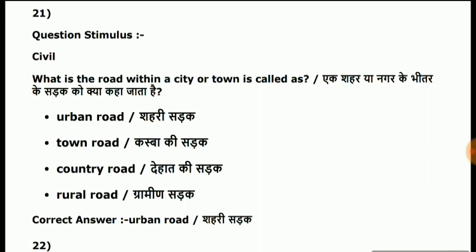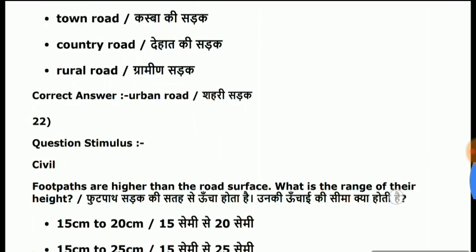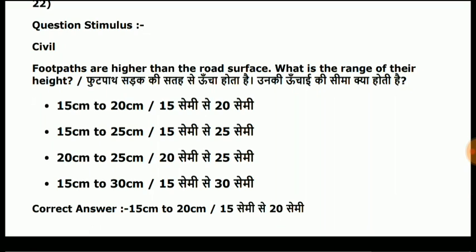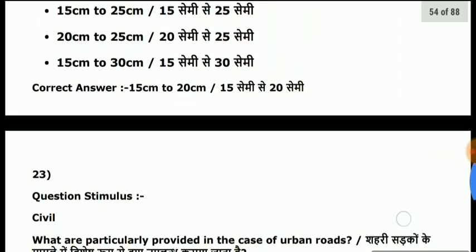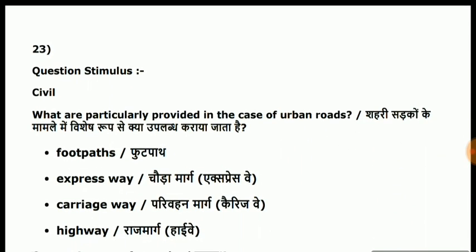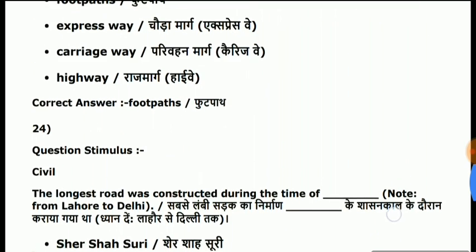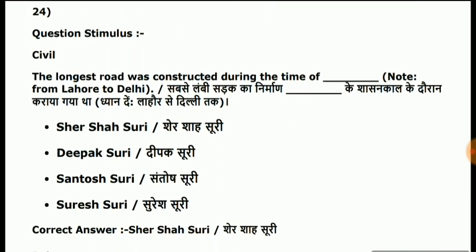Question 21: what is the road within a city or town called? It is called an urban road. Question 22: footpaths are higher than the road surface — what is the range of their height? Answer is 15 cm to 20 cm. Question 23: what are particularly provided in case of urban roads? Answer is footpaths. The longest road was constructed during the time of Sher Shah Suri — Grand Trunk Road.